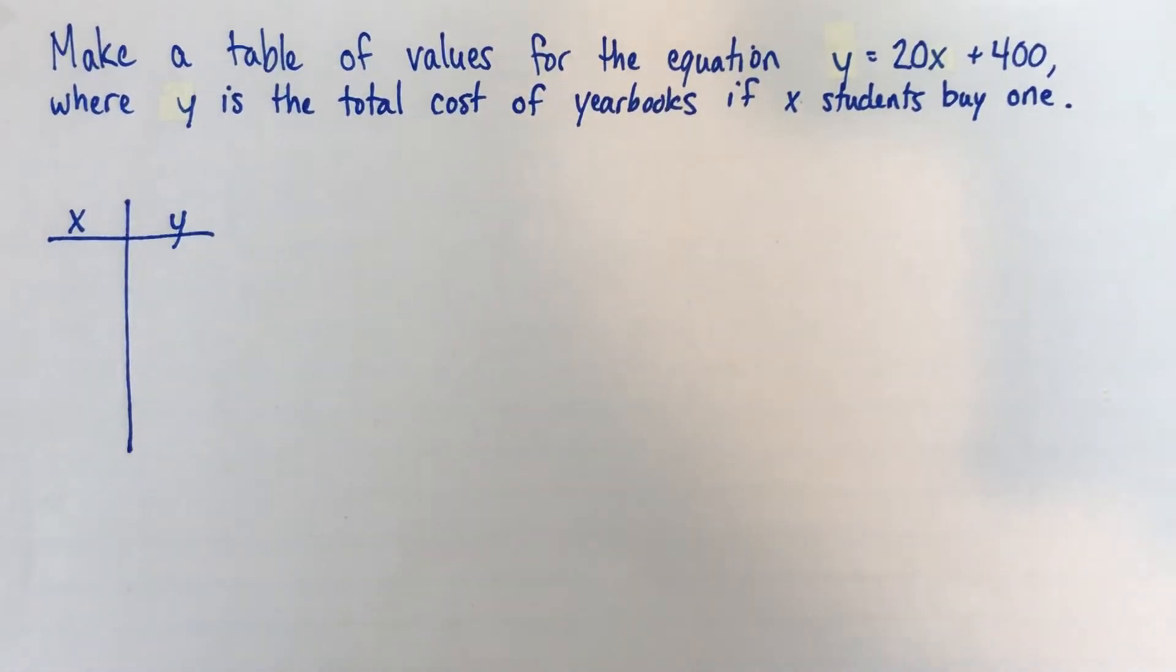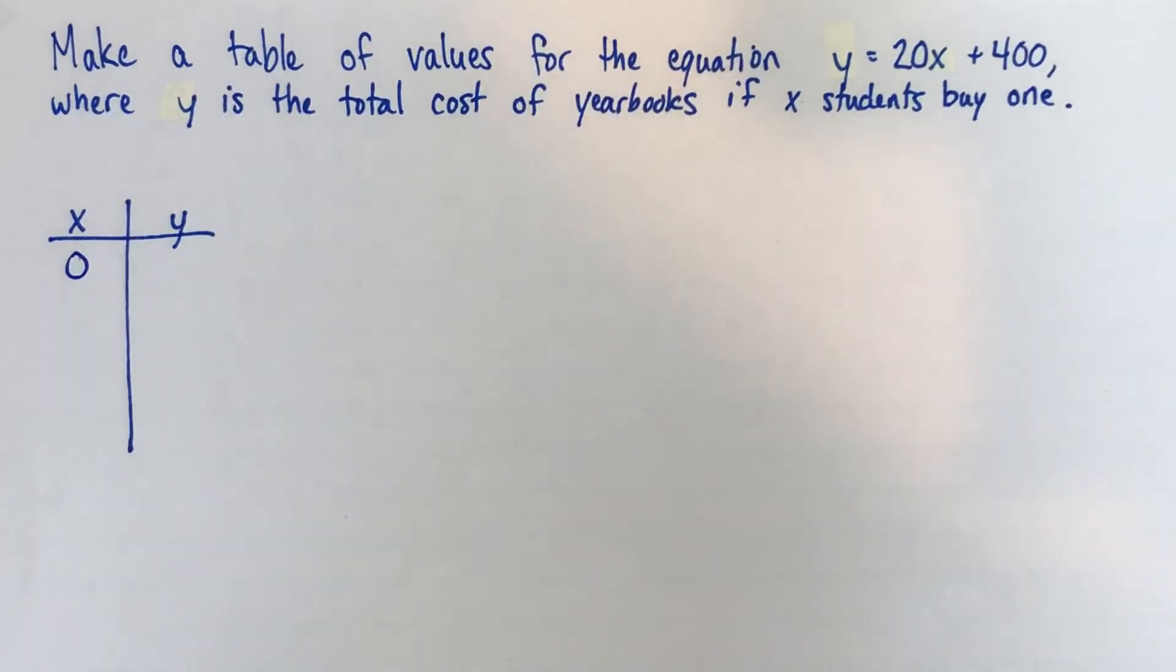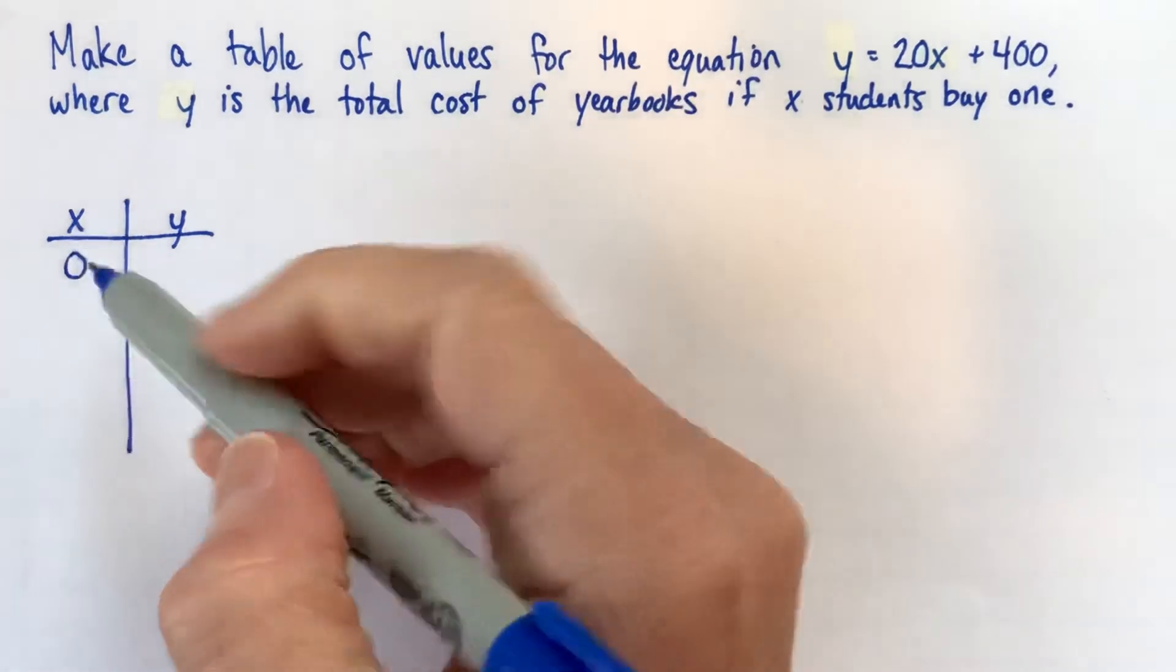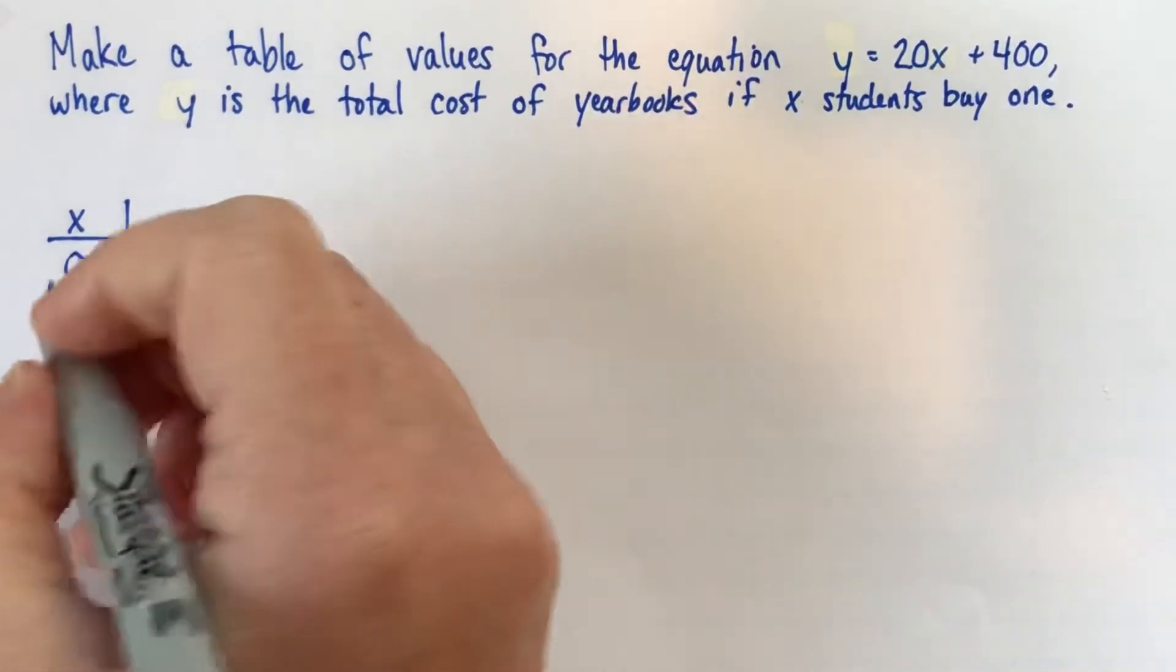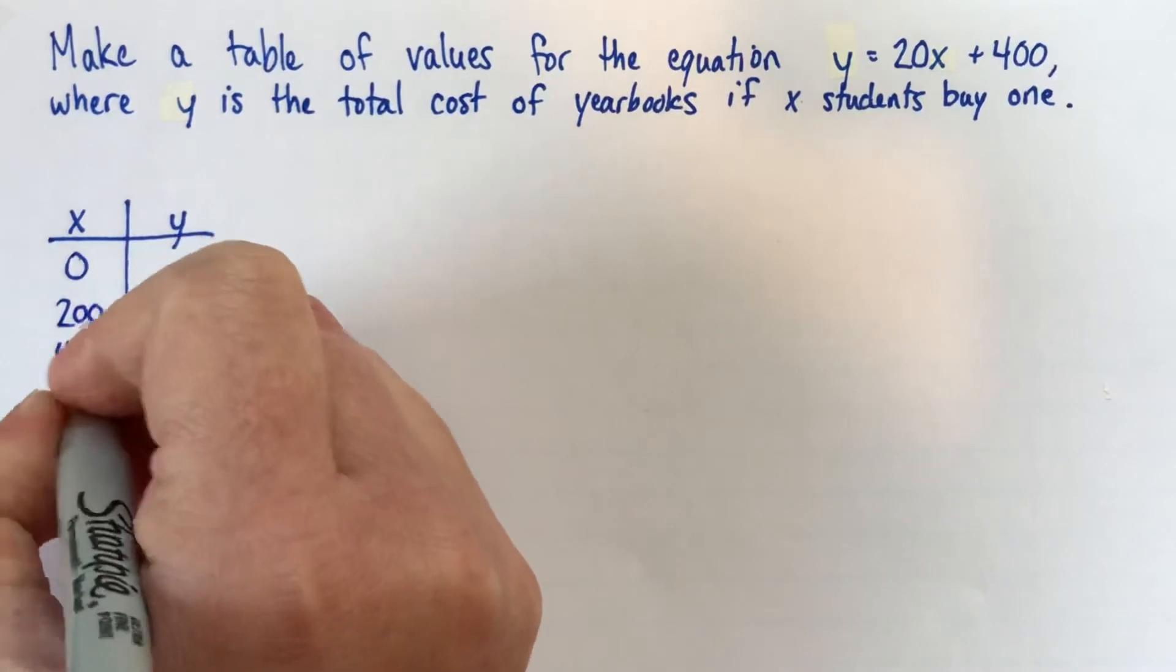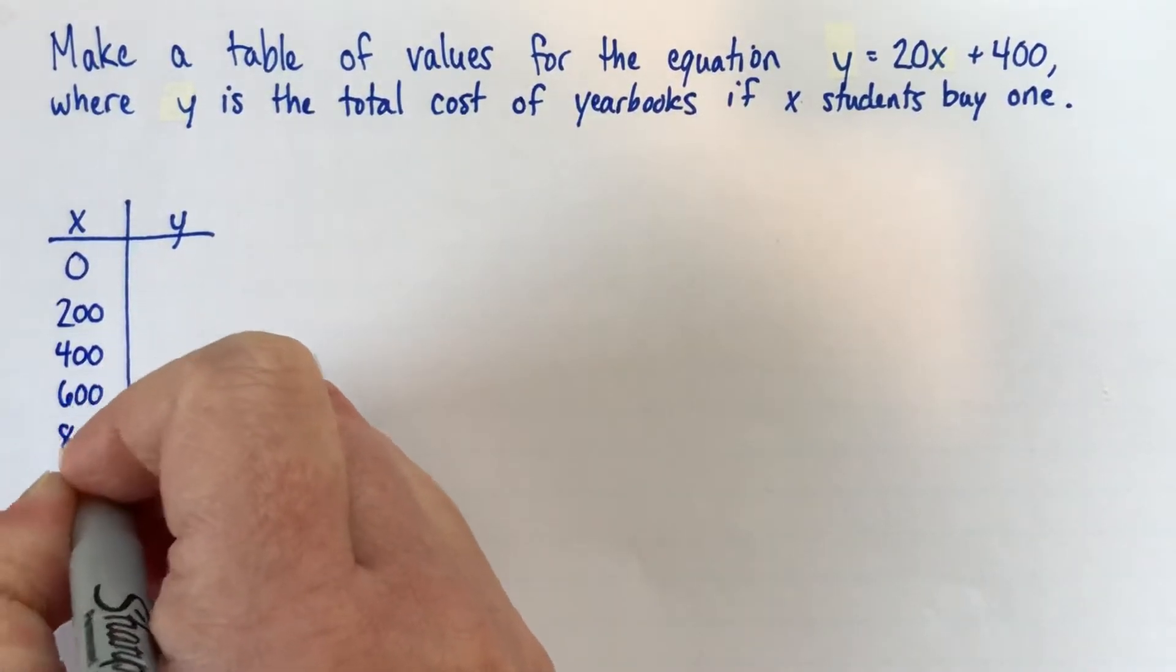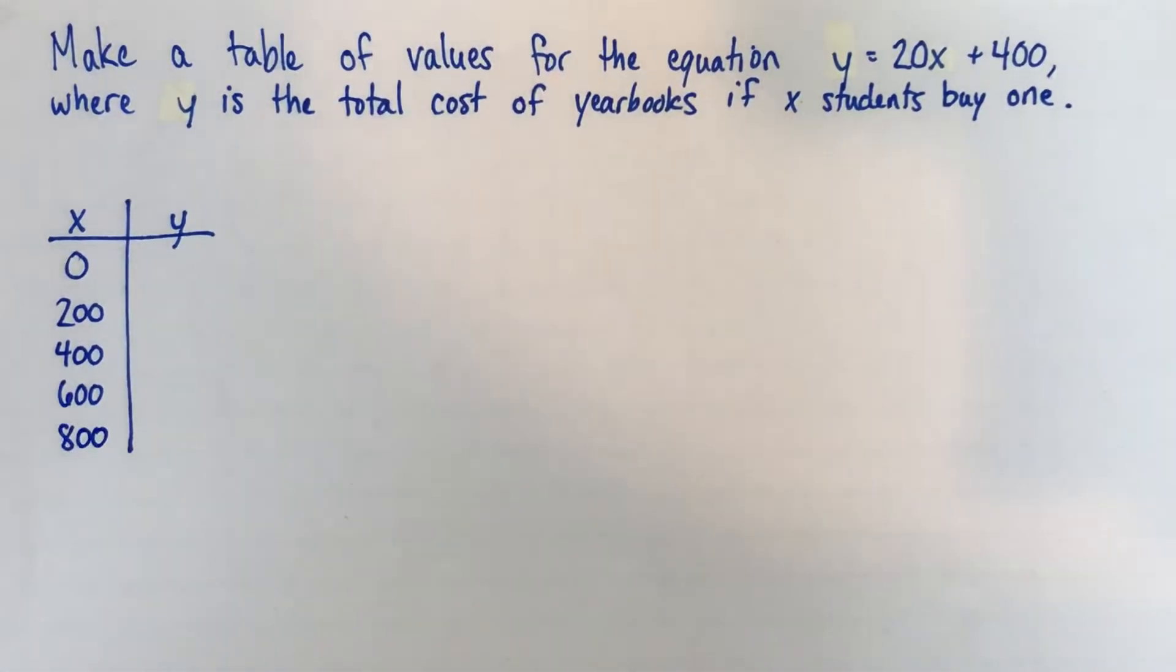So we could make our x values just kind of go up to 800. Now, I would suggest, unless you have a good reason not to, I think it's a good idea to include 0 in your table of values because it shows us some interesting things about the relationships. It's not a hard and fast rule, but I think it's a good idea. And then if we went maybe 2, 4, 6, yeah, we could count up by like 200s here. 200, 400, 600, 800, and so that's a reasonable number of points for a table of values, like five points. That's, I think, not too many, not too few.